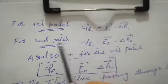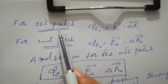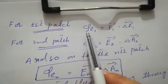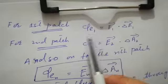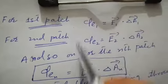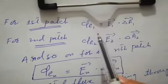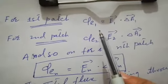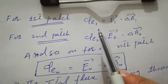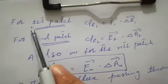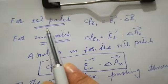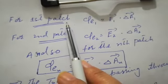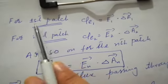Students, we have seen that we have divided the surface into small patches. When we divide it into small patches, it acts as a flat surface, so we will calculate all the patches one by one.